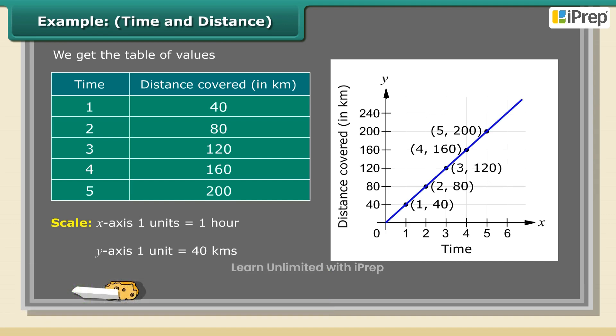We get a linear graph. (1) On the vertical axis, 160 kilometers corresponds to 4 hours on the horizontal axis. (2) On the horizontal axis, 2.5 hours corresponds to 100 kilometers on the vertical axis. Therefore, Akshay covers 160 kilometers in 4 hours and in 2.5 hours is able to cover a distance of 100 kilometers.